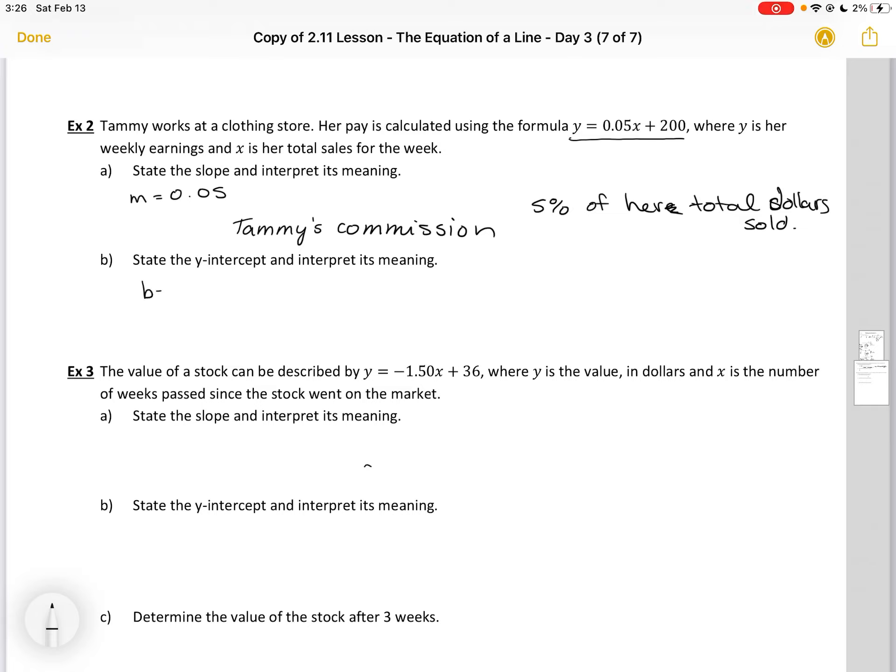The y-intercept in this case is at the end. This is $200. This means that Tammy gets paid $200 even if she doesn't sell anything for the week. So she gets paid $200 plus 5% of whatever dollars she sold that week.